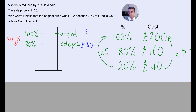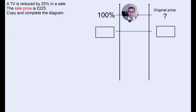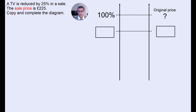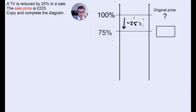Let's do a second example. A TV is reduced by 25% in a sale. The sale price is £225. Copy and complete this diagram — there are only two blanks to fill in here. We don't know the original price. So hopefully you've figured out that a 25% discount means taking away 25%, so we are going to be ending up with 75%, and that 75% is £225.